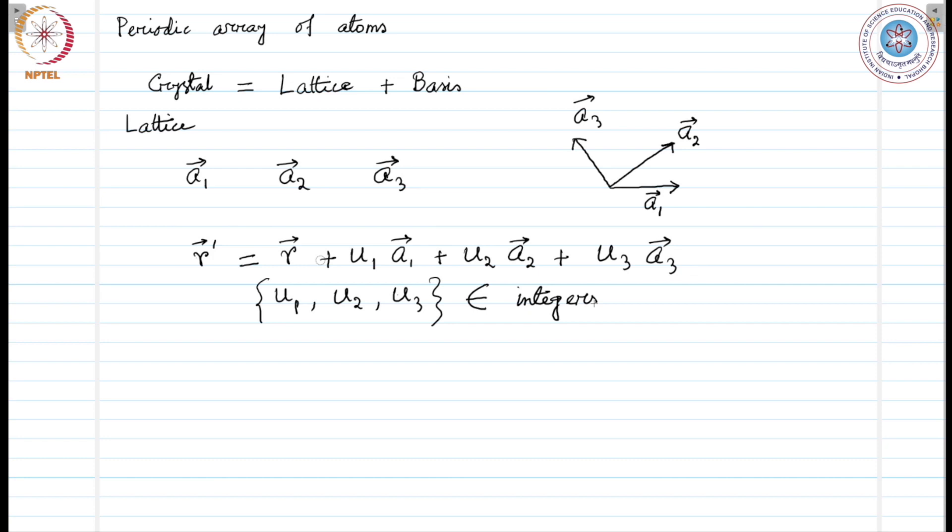If these are integers, if R represents a lattice point, then R prime will represent a similar kind of a lattice point after this addition of this linear combination of the primitive lattice vectors.